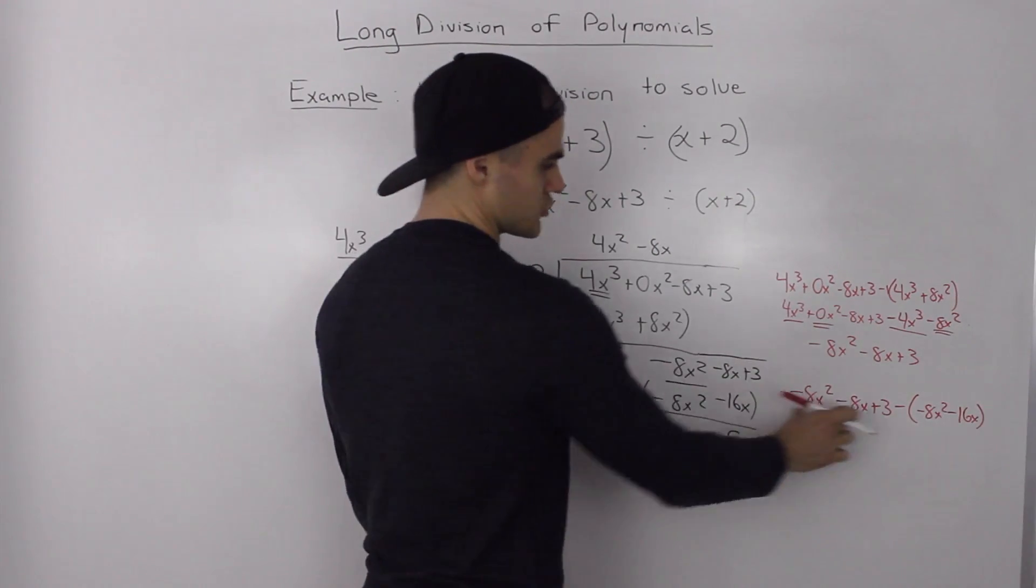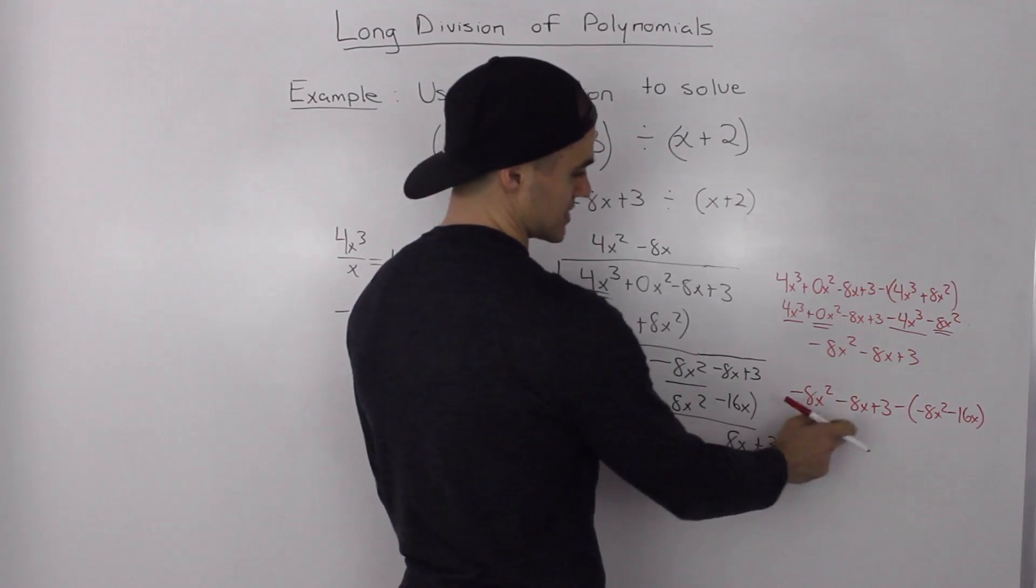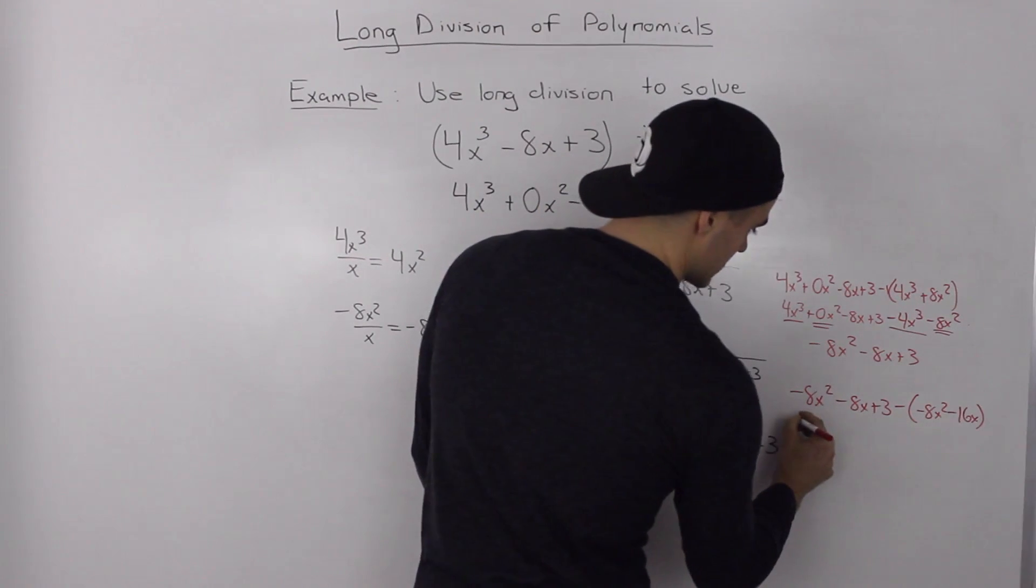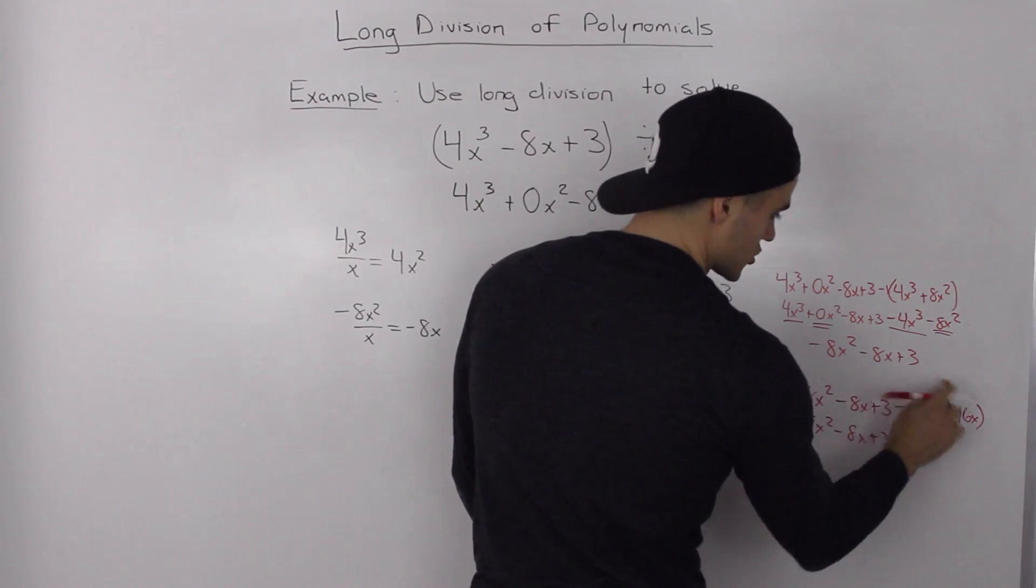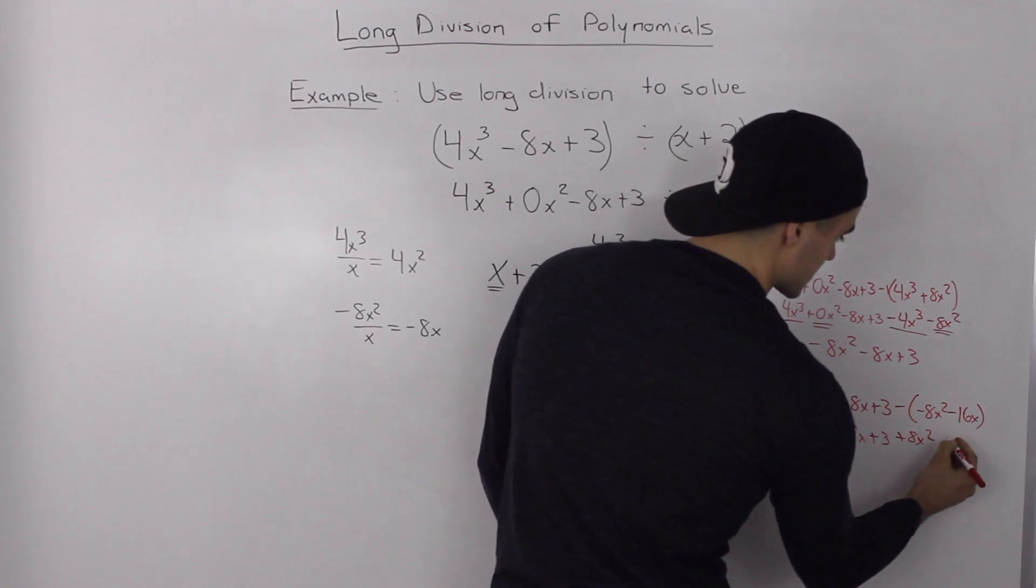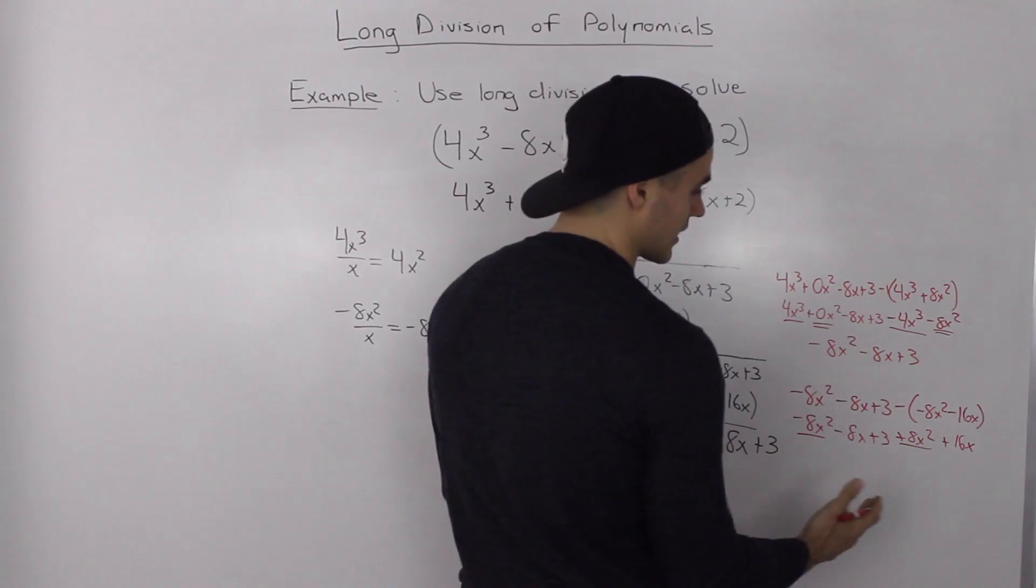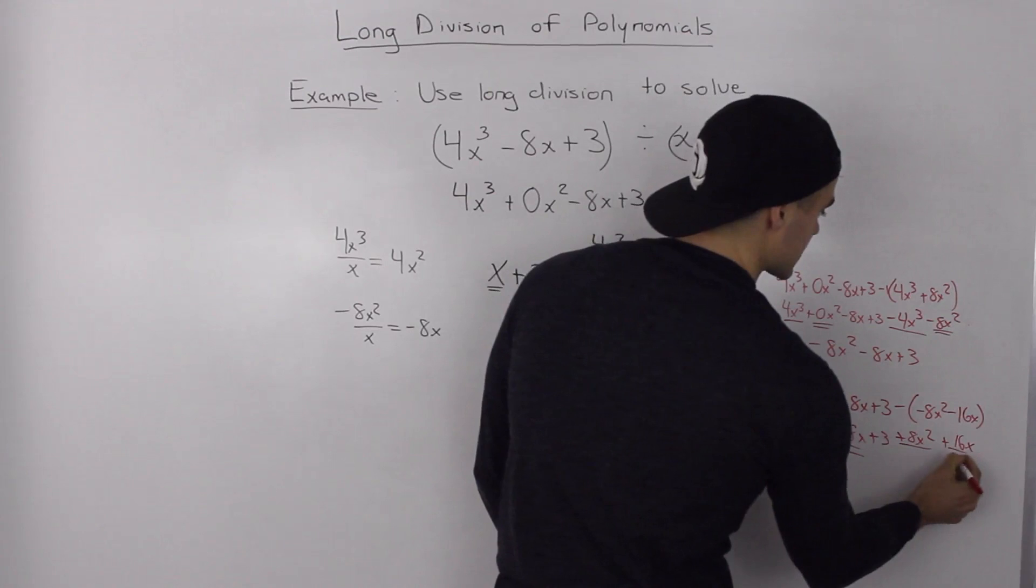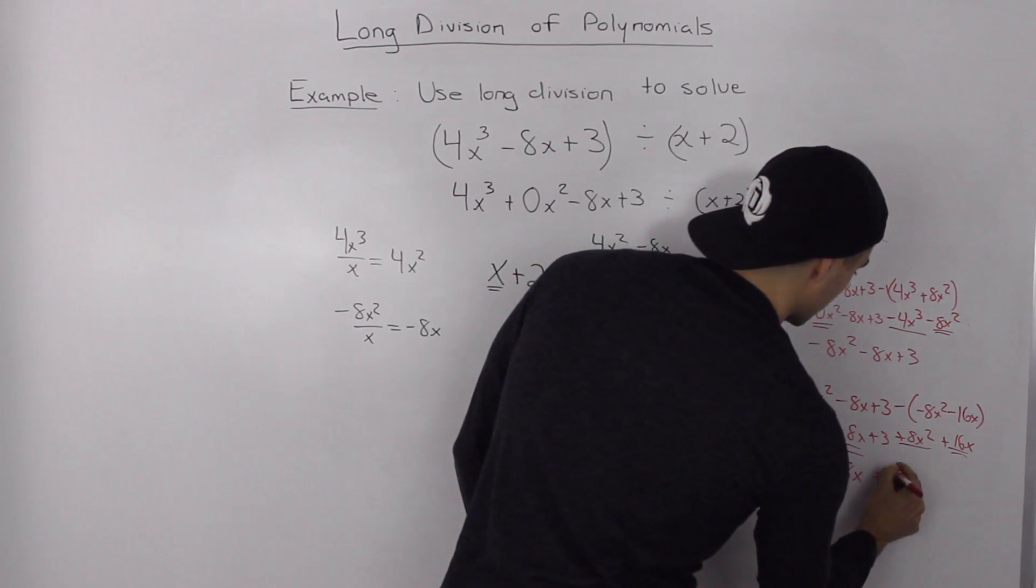So, doing this subtraction here on the side, just to make sure we didn't do any mistakes. So, this negative 8x squared minus 8x plus 3 minus this negative 8x squared minus 16x. So, if we do this here, distribute the negative 1 in, that ends up being plus 8x squared. Negative 1 times negative 16, that's positive 16x. So, negative 8x squared plus 8x squared, that nets out to 0. Negative 8x plus 16x, those are like terms, that ends up being 8x. And then plus 3.